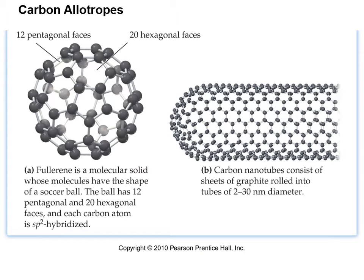There are two other carbon allotropes that are a little more exotic. The first is called fullerene and it actually looks like a soccer ball — it's a ball of carbon atoms with the same pattern as a soccer ball. Then we've got carbon nanotubes, which are very long fibers — basically a really elongated buckyball that just keeps going and going.